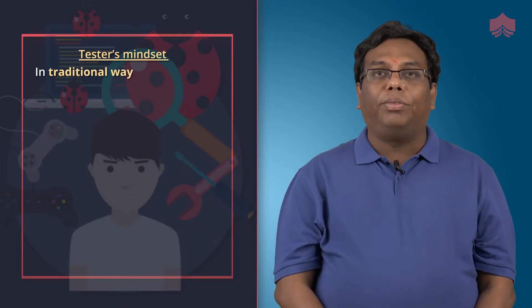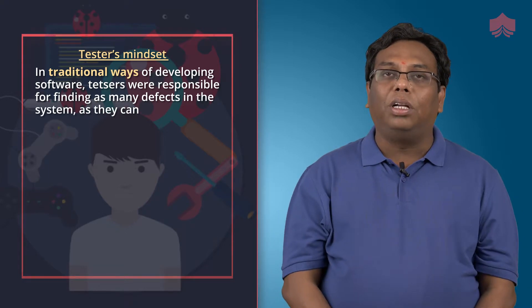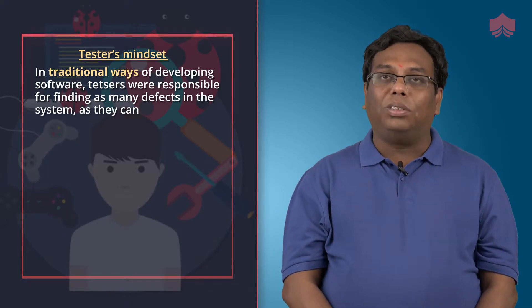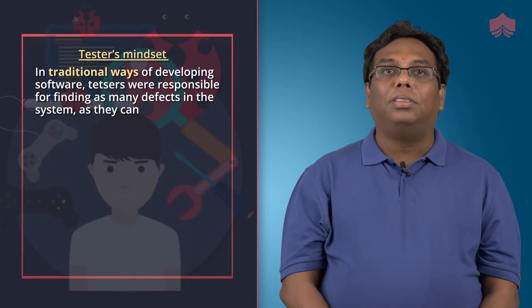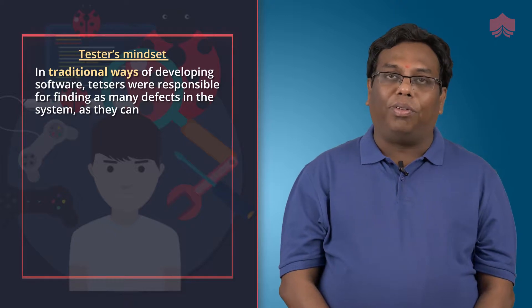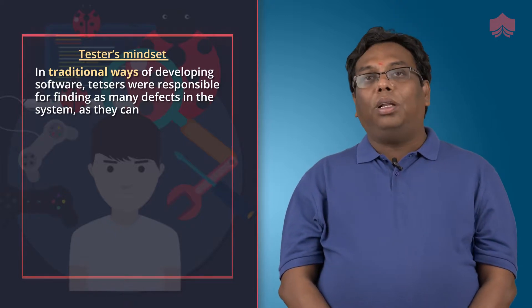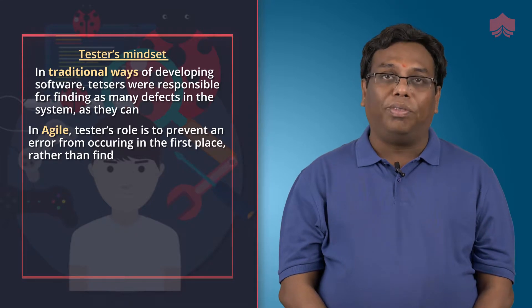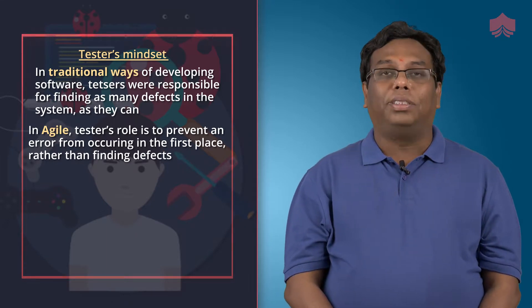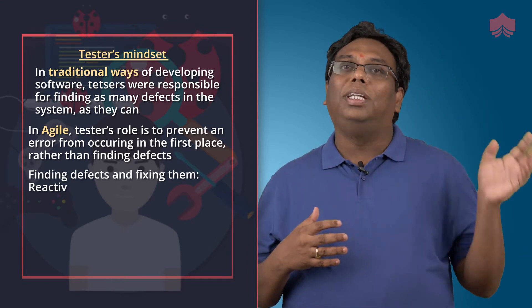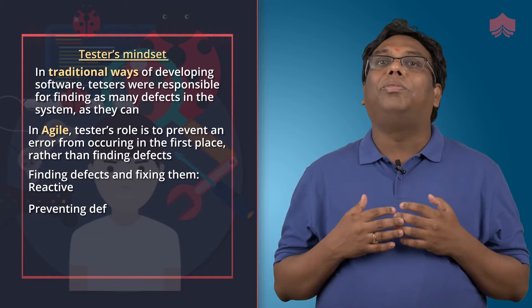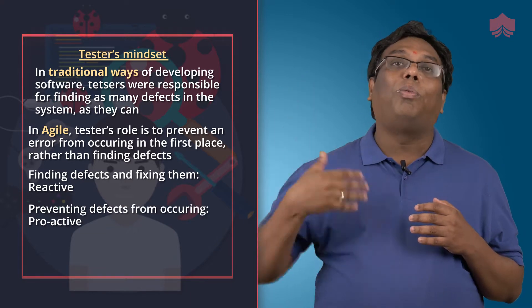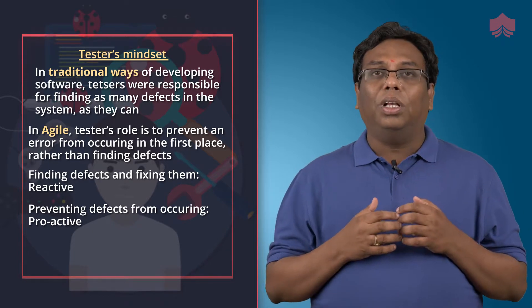In traditional ways of developing software, the main responsibility of the tester was to find as many defects as possible in the system and try to break the system whenever they are testing any given software. In agile, we say the tester's mindset should be more of preventing defects from occurring in the first place rather than finding defects. Finding defects and fixing them is mostly the reactive way, whereas preventing defects from occurring in the first place is more of a proactive basis of eliminating defects in the system.